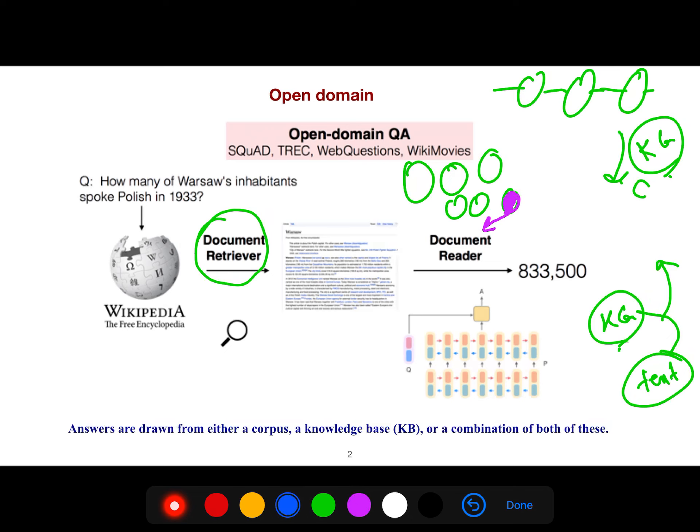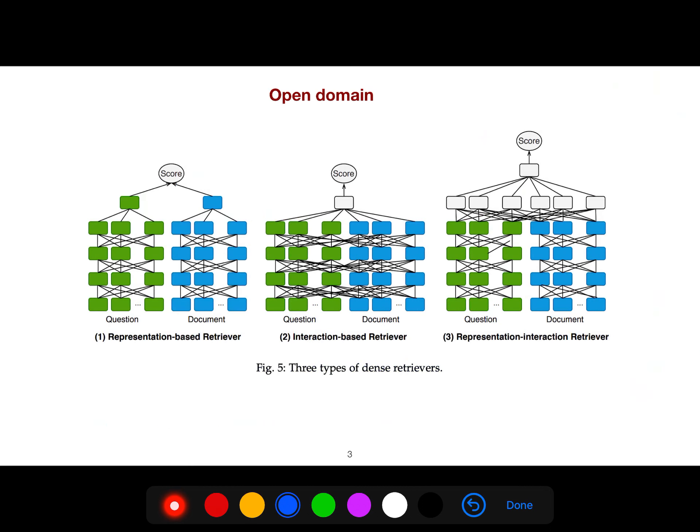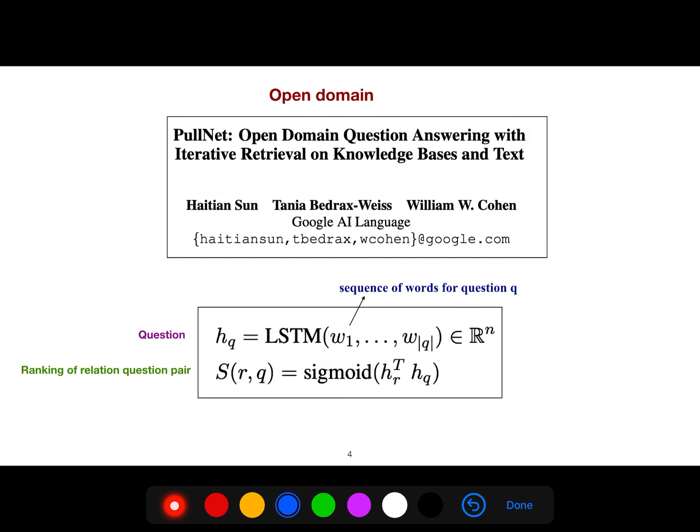You could have a choreography, switching between different evidences like a Markov chain, and then answer the question. There are three types of dense retrieval, because you have a question, you have a document, and the way that they are interconnected to create a score could be different. It could be very interconnected or different architectures.